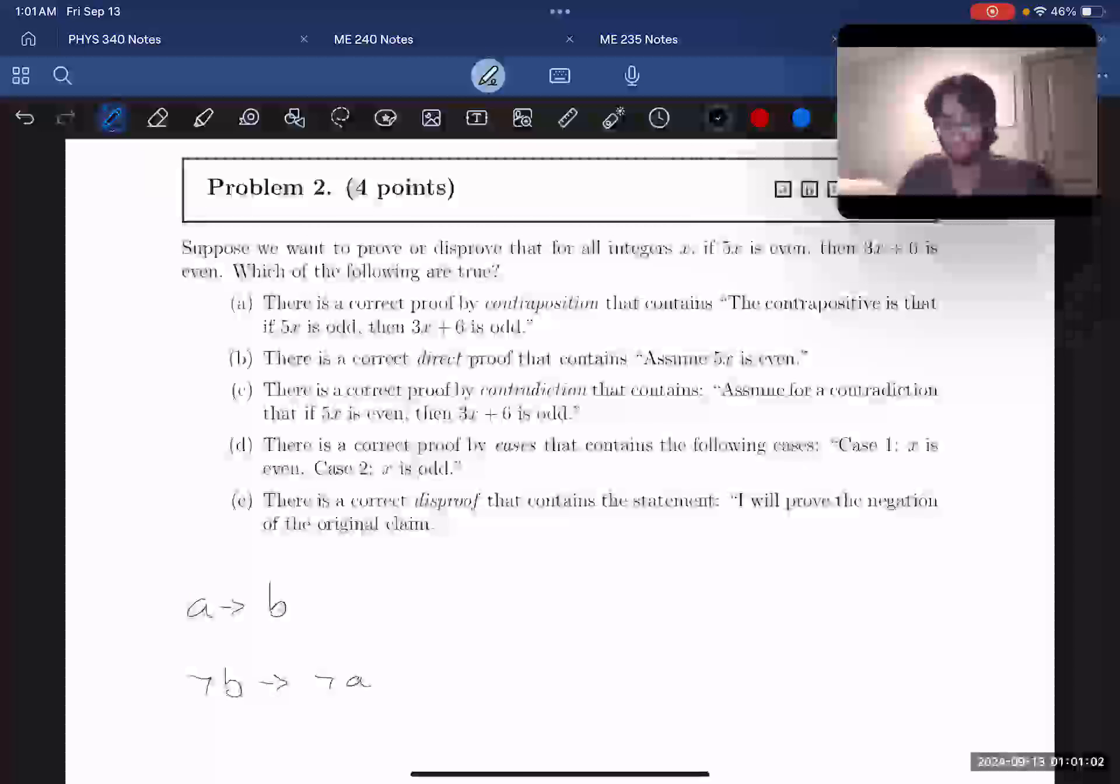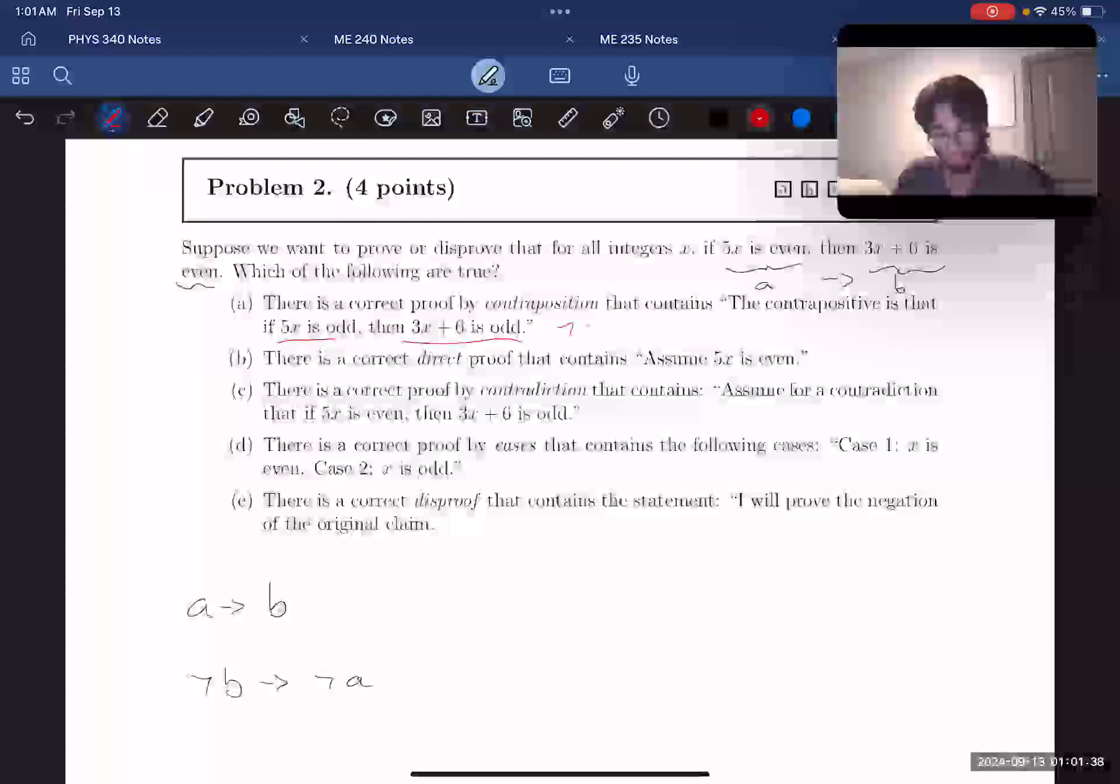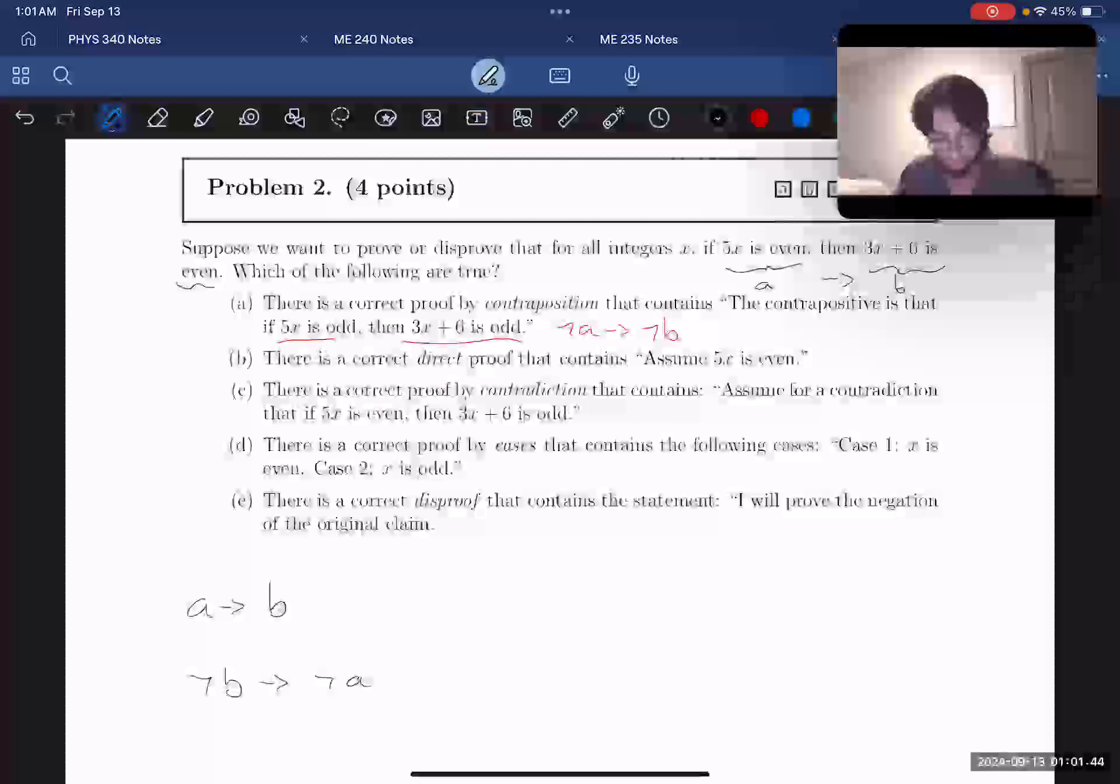What are the A and B statements in our question here? 5x is even is our A statement, and 3x plus 6 is even is our B statement. So the contrapositive in this case would be 3x plus 6 is odd implies that 5x is odd. However, in part A, they say that the contrapositive is that if 5x is odd, then 3x plus 6 is odd, which is a swapped order. This would be not A implies not B, instead of not B implies not A. So we know that A is incorrect.